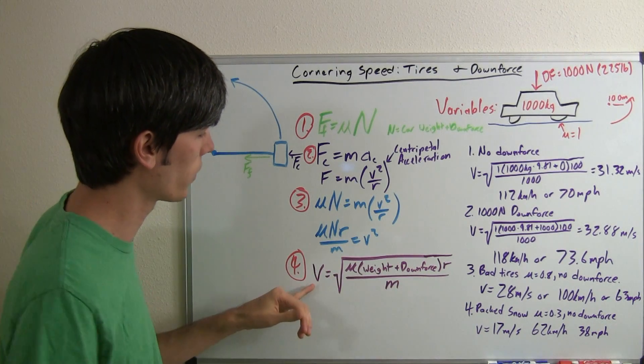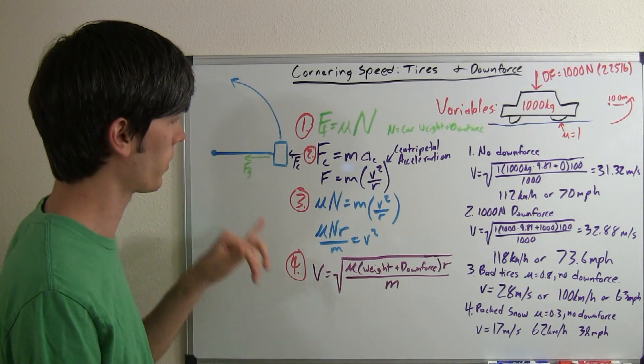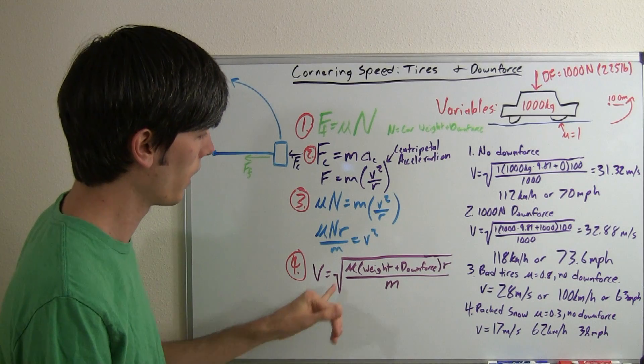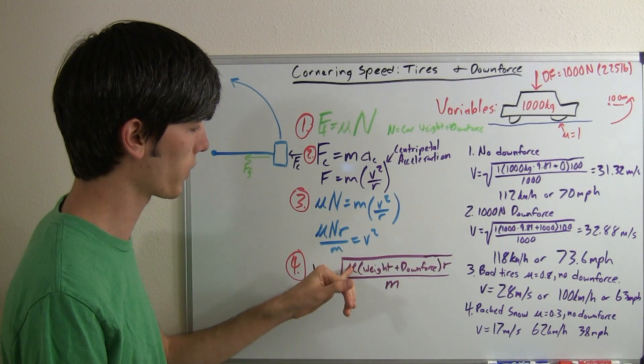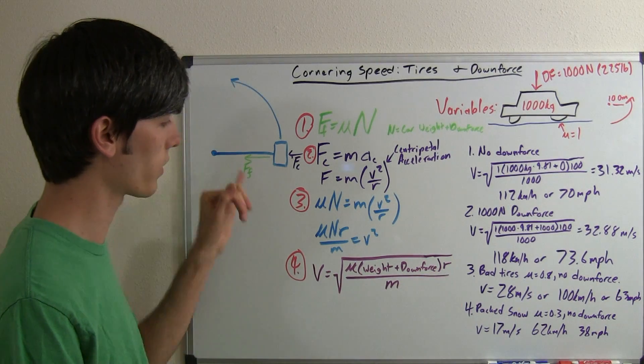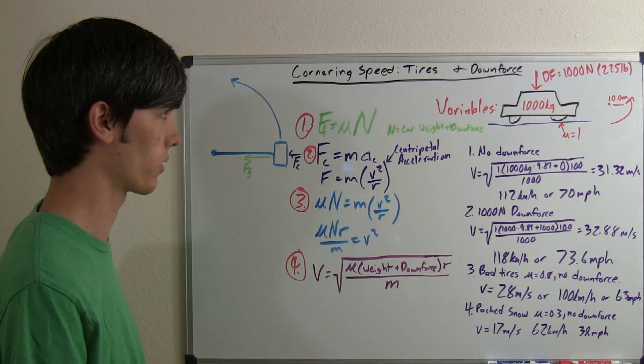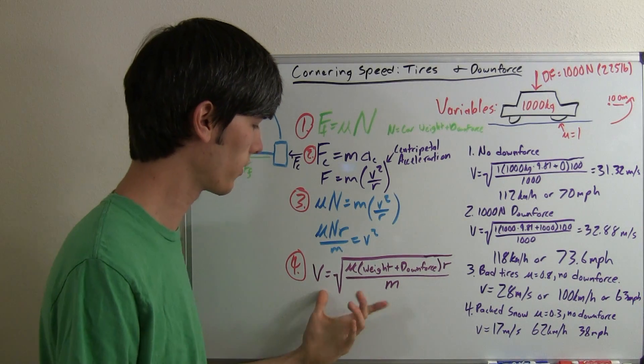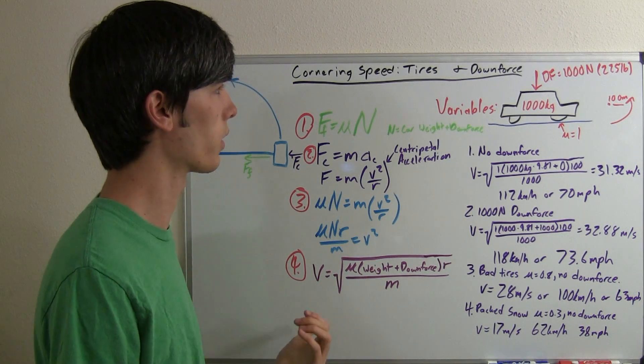So, once we've rearranged this, we can say the maximum velocity for which this car can go around the corner is going to be the square root of the coefficient of friction multiplied by the weight plus the downforce times the radius of the turn divided by the mass of the vehicle. So this is how we find out our maximum vehicle speed.